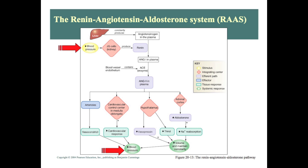Let's walk through these one by one. When angiotensin-2 is increased, our arterioles will vasoconstrict, and that increases blood pressure. Also, at the cardiovascular control center in the medulla oblongata in our brain, the cardiovascular response will increase, therefore increasing cardiac output — including heart rate and contractions of the heart — to raise blood pressure.